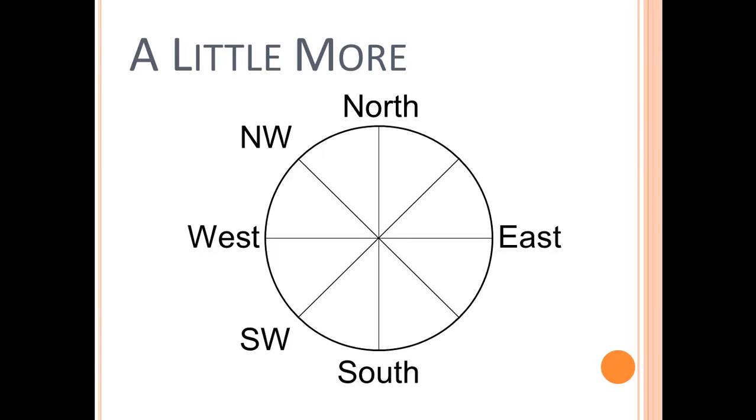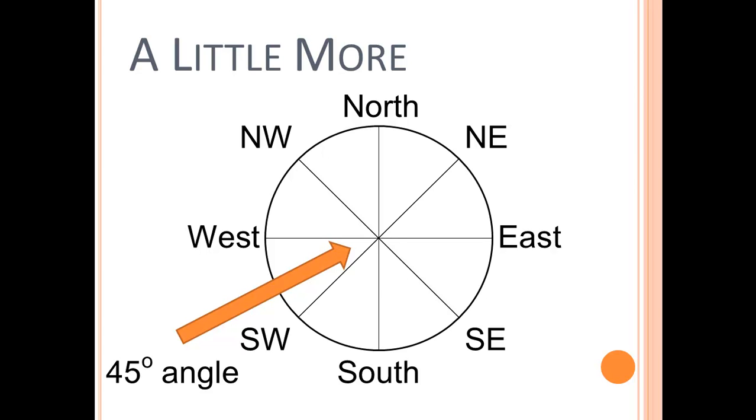And you'll notice that North and South are always named first when combining directions. So the direction between East and South is going to be Southeast. And finally, we have Northeast. And you'll notice that now there is a 45 degree angle between the diameters. And these secondary directions are called the intercardinal directions.